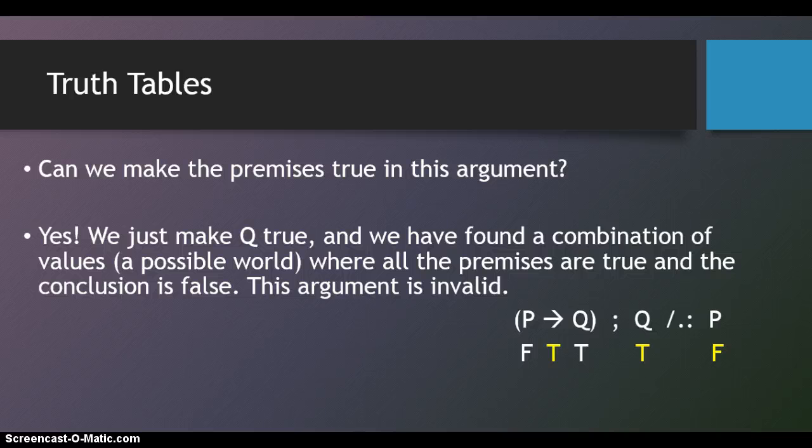It turns out, yes. Now we can just make Q true, and we've found a combination of values, a possible world. There's nothing inconsistent here. We've constructed a row that we would have found if we'd constructed the full table, where all the premises are true, and the conclusion is false. Therefore, this argument is invalid.